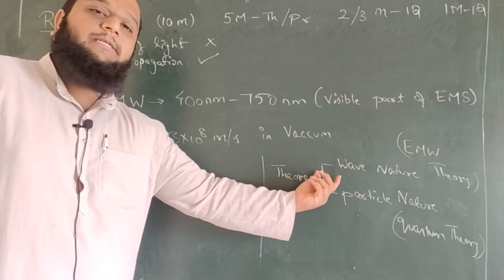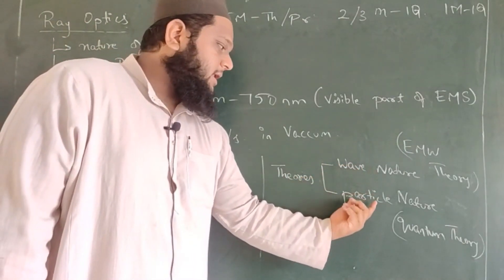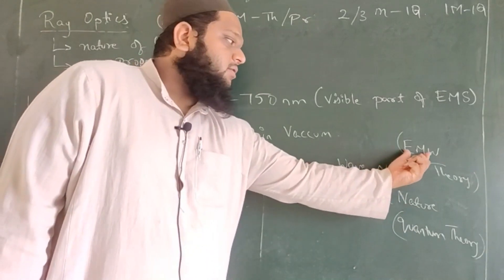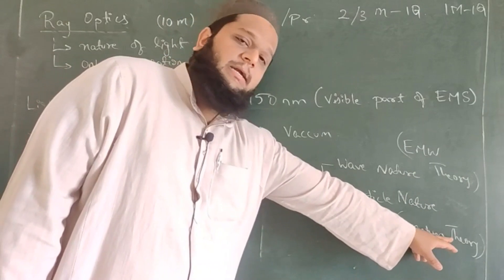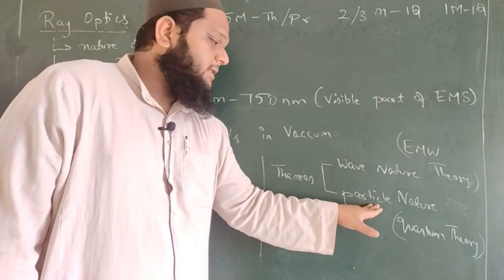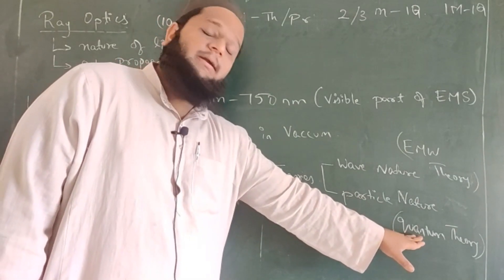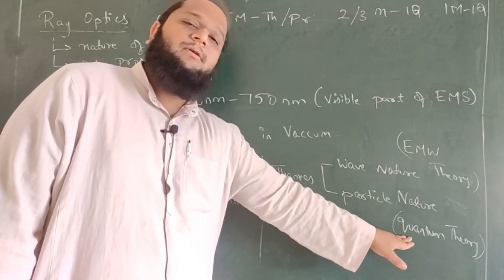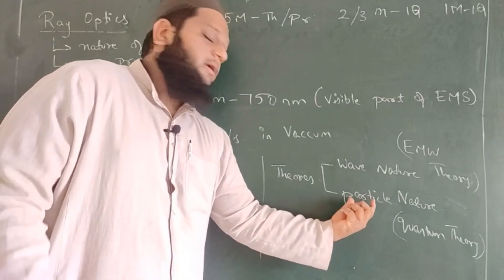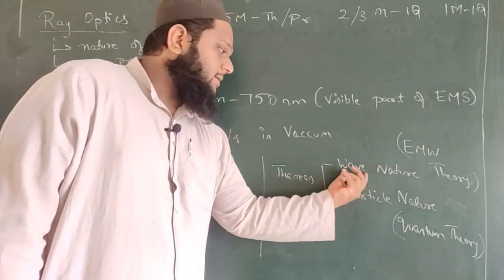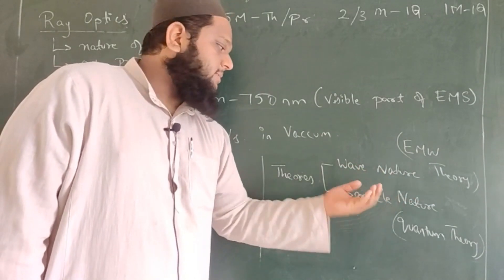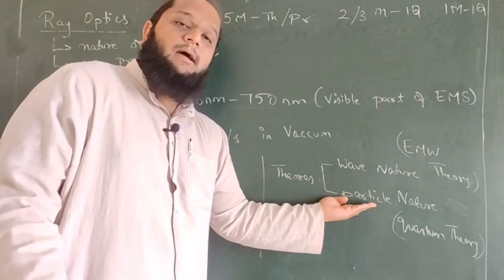What are the theories available to explain the nature of light? There are basically two: wave nature and particle nature. Under wave nature, it is called electromagnetic wave theory. Under particle nature, it is called quantum theory. Particle nature — where you learn about dual nature of matter, atoms and nuclei — deals with light in the form of small packets of energy called quanta or photons. Wave nature is based on light being an electromagnetic wave. You will study wave nature in wave optics and particle nature in the chapters on atoms, nuclei and dual nature.